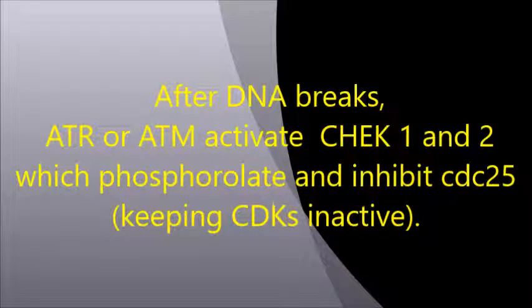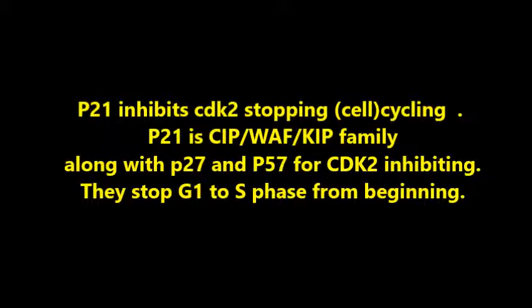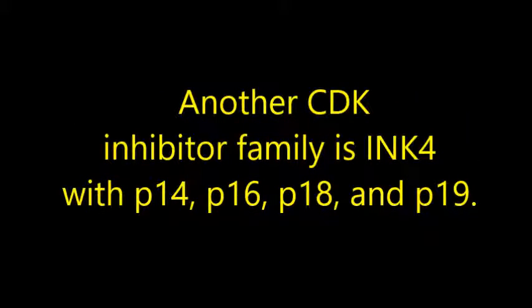After DNA breaks, ATR or ATM activate CHK1 and CHK2, which phosphorylate and inhibit CDC25, keeping CDKs inactive. ATM and CHK2 activate P53, the tumor suppressor guardian of the genome, which activates MDM2 and P21. P21 inhibits CDKs, stopping cyclin activity. P21 is in the CIP/WAF family, along with P27 and P57, for CDK inhibition — they stop G1 to S phase entry. Another CDK inhibitor family is INK4, with P16, P18, and P19.